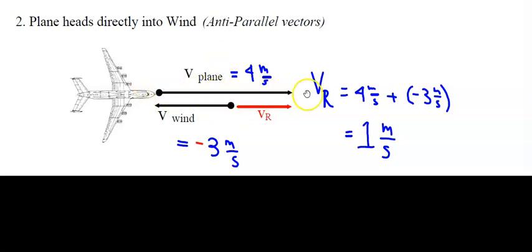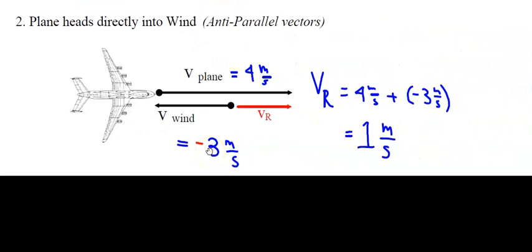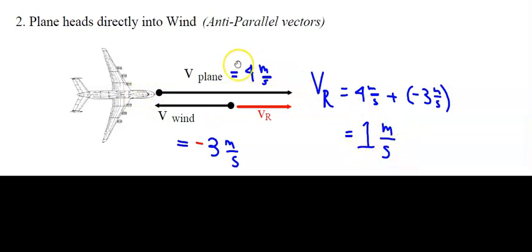In the next example, the plane is heading directly into the wind. The plane moves at four meters per second to the east, but now the wind is blowing against the plane at three meters per second west. West is negative, so the resultant is four meters per second east plus negative three meters per second east, giving one meter per second. This plane, heading into a headwind, is slowed down to one meter per second from its original speed.